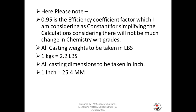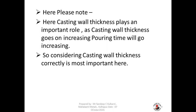The efficiency coefficient of 0.95 is treated as a constant in this formula. Casting wall thickness plays an important role — as casting wall thickness increases, the pouring time will also increase. Therefore, considering casting wall thickness correctly is the most important factor in obtaining the correct pouring time.